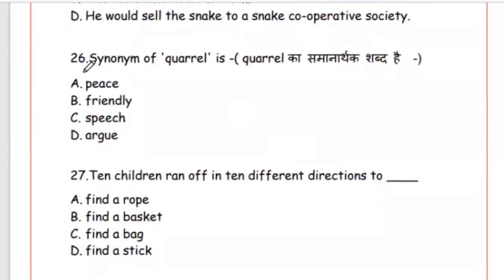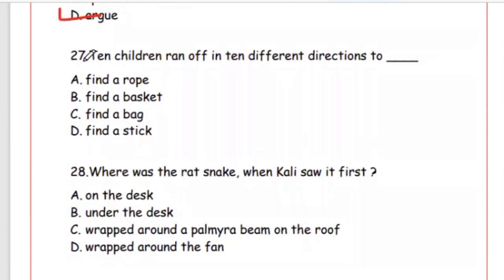Question 26: Synonym of 'quarrel.' Synonym means saman-arthak shabd. The right option is 'argue.' Question 27: Ten children ran off in ten different directions — to find a rope, a basket, a bag, or a stick? Das bache das dishon mein kya dhunne gaye? The answer is Option C, find a bag.